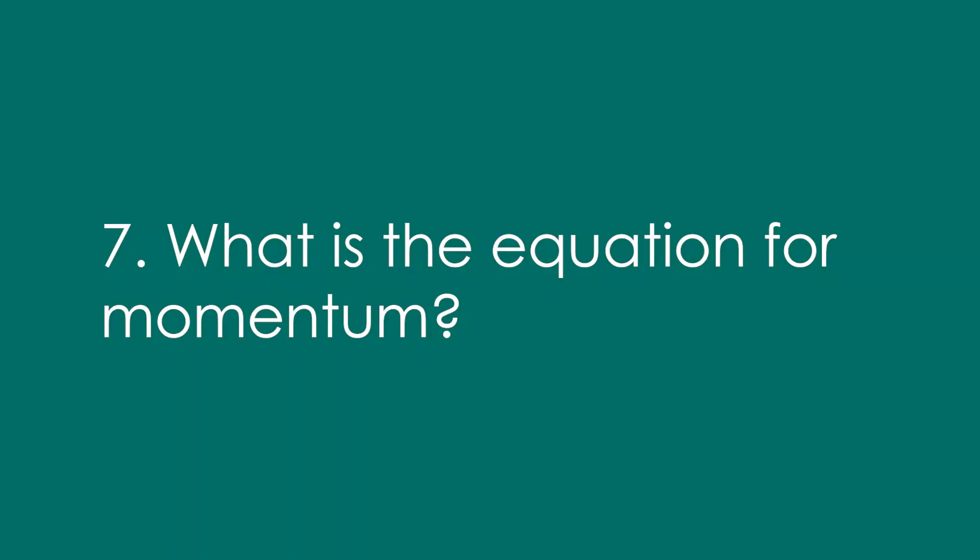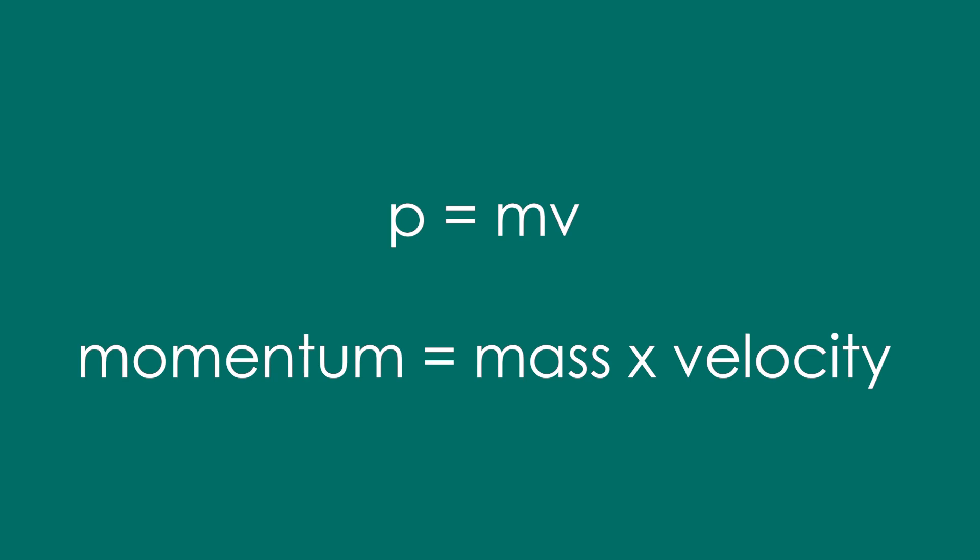7. What is the equation for momentum? Momentum is mass times velocity. That's MV. Sometimes you might see P given as the symbol for momentum. Not often though.